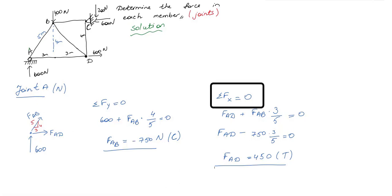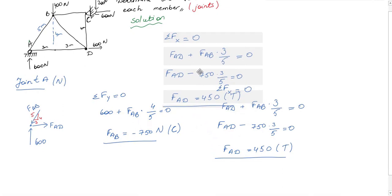After that, write equilibrium equation for x direction. I know FAB, and the x component of FAB will be equal to FAB times 3 over 5. Also, I have FAD in x direction. Substitute FAB into the equation and you will get FAD as 450 newtons. So I found FAD as 450 Newton which is positive, which tells me that it is tension. I found FAB as minus 750 Newton, so let me correct this one here. I will change its direction showing that it is compression. So far so good guys.